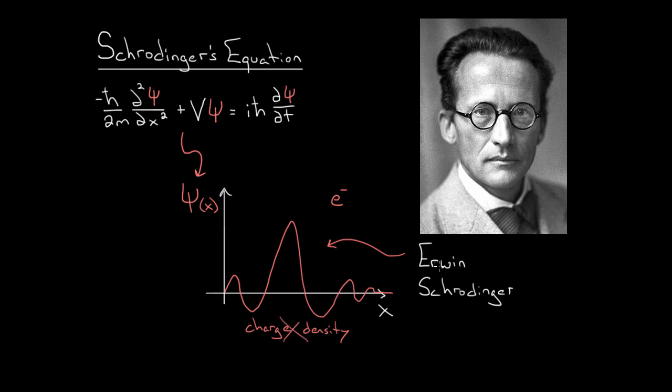Schrödinger invented this equation. He came up with this equation, but he couldn't even interpret what he was describing correctly. It took someone else. It took a guy named Max Born to give us the interpretation we go with now for this wave function.